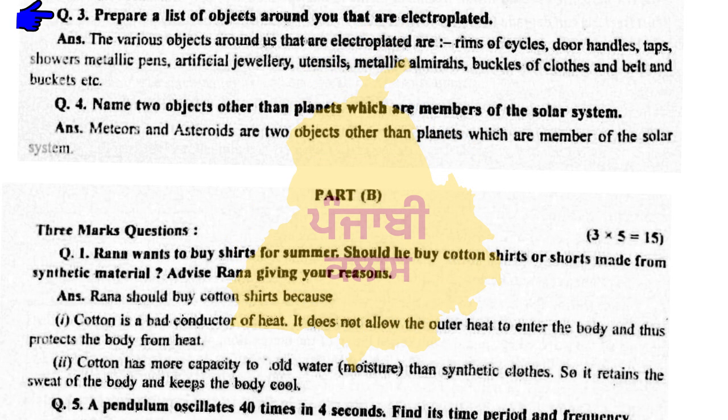Question number three: Prepare a list of objects around you that are electroplated. The various objects around us that are electroplated are rims of cycles, door handles, taps, shower, metallic pens, artificial jewelry, utensils, metallic almirahs, buckles of clothes and belt, and buckets etc. Question number four: Name two objects other than planets which are members of the solar system. Meteors and asteroids are two such objects.